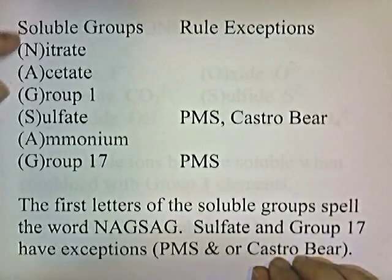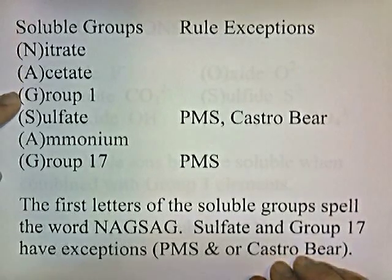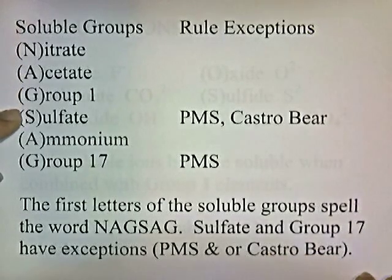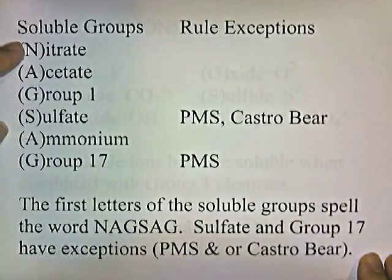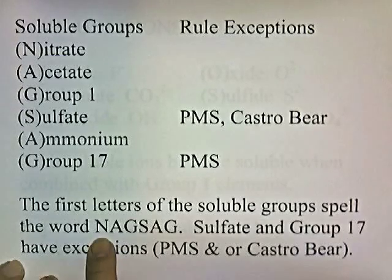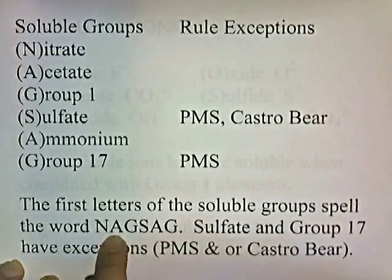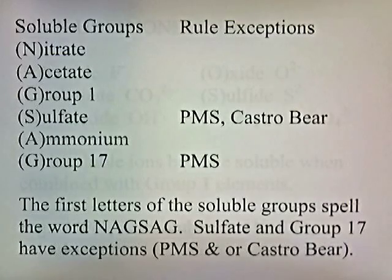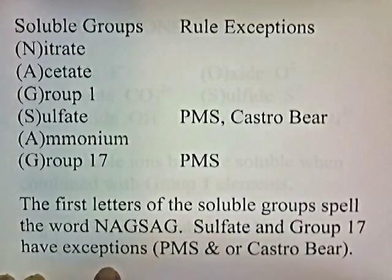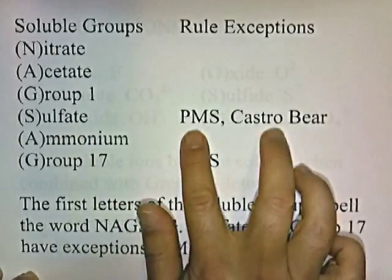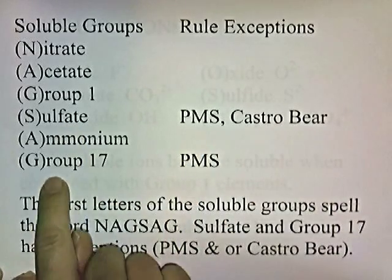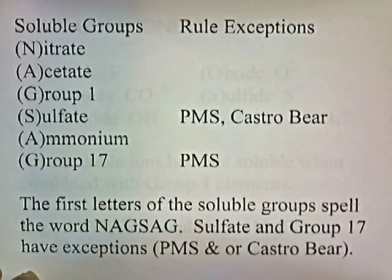Here's a list of the soluble groups: nitrate, acetate, group 1 elements, sulfate, ammonium, and group 17. If you take the first letter of the soluble groups, they spell out the word NAGSAG — you can use NAGSAG to remember the names of the soluble groups. Sulfate and group 17 ions have exceptions: PMS and Castro-Bear for sulfate, and PMS for group 17.